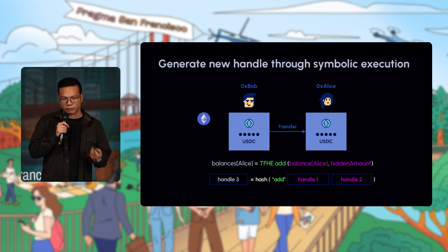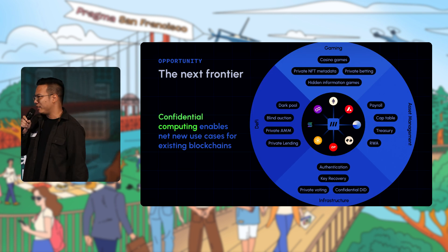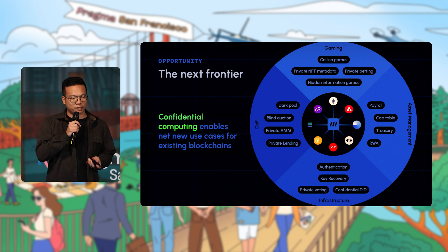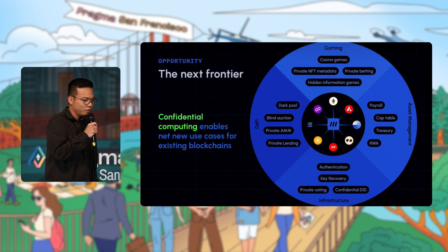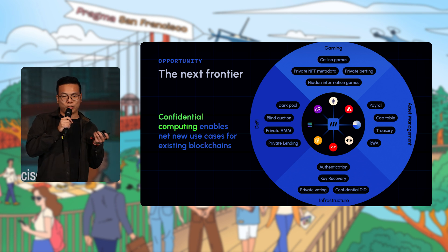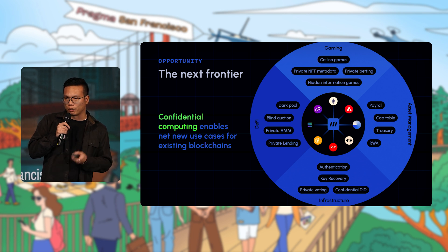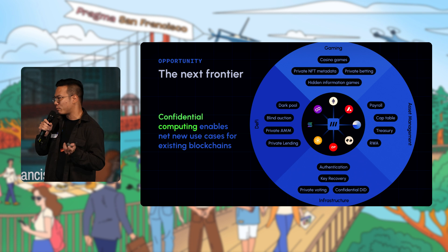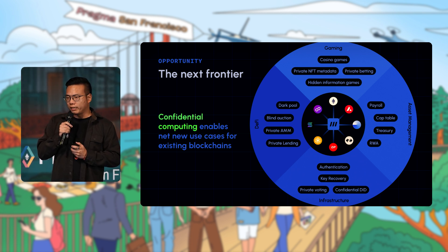Let's talk about use cases. This concept of private state exists everywhere — it's literally how we build things in Web2. If you want to build something like eBay in Web2, you need to shield everyone's bids. This concept of private state just doesn't exist in current blockchains because everything is transparent and everyone has perfect information.